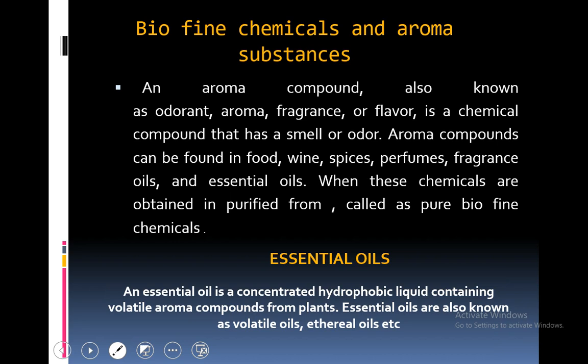What are the biofine chemicals and aroma substances? An aromatic compound, also known as odorant, aroma, fragrance or flavor, is a chemical compound that has a smell or odor. Aromatic compounds can be found in foods, wines, spices, perfumes, fragrances, oils and essential oils. When these chemicals are obtained in purified form, these are known as pure biofine chemicals. Essential oil is a concentrated hydrophobic liquid containing volatile aromatic compounds from plants, also known as volatile oils or ethereal oils.